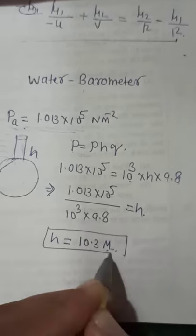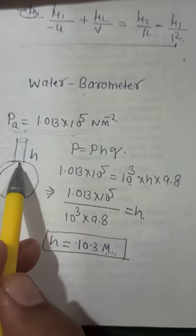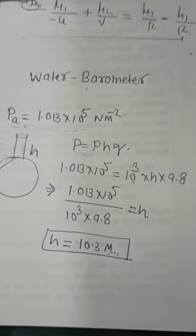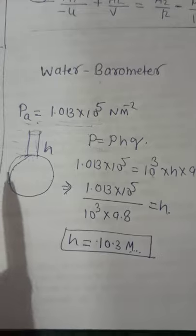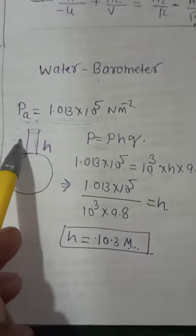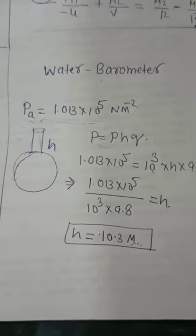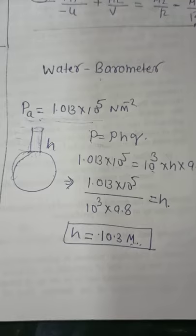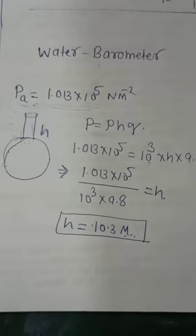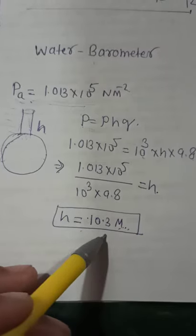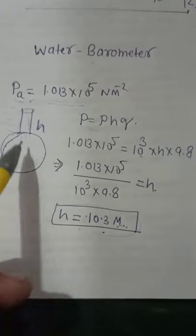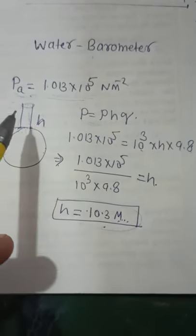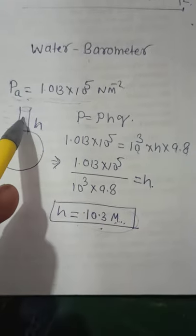So you can assume that the water column is so big. 10.3 meters is a very big height for a device. So it is very difficult to arrange a water column of 10.3 meters with the support of the atmosphere. That's why mostly we use mercury, not water, to measure atmospheric pressure. Because of this height, we can't be able to handle the water barometer very much. Therefore, mercury is the best for atmospheric pressure measurement.